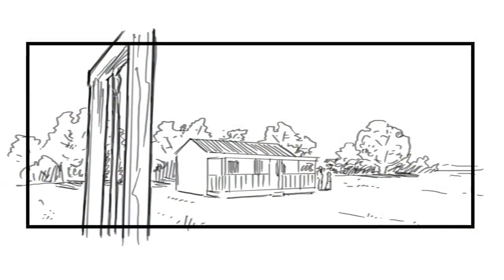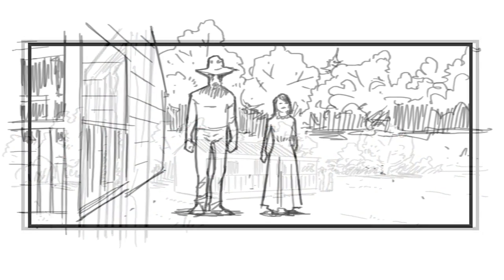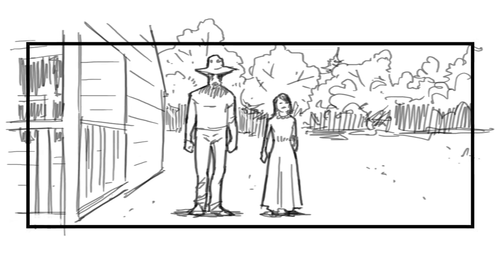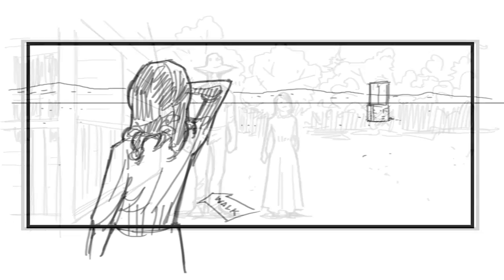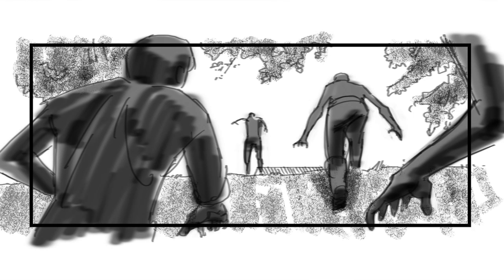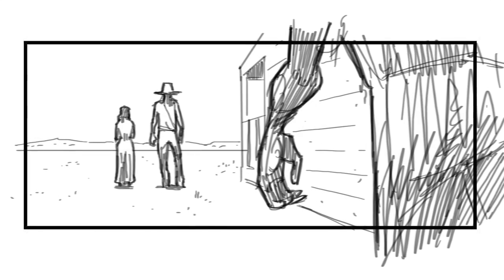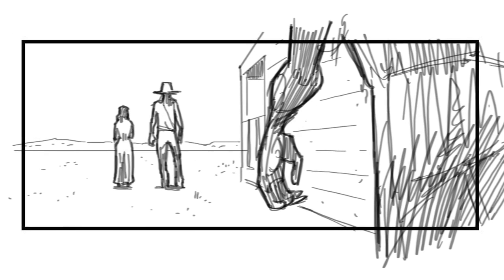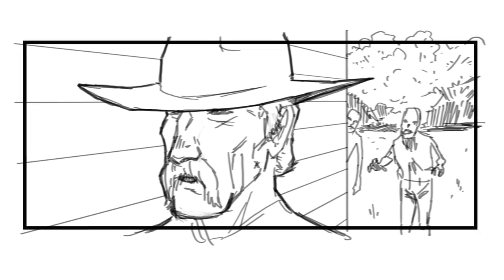Let's take an Old West setting. Let's say there's an old homesteader and his young daughter outside in front of their house and they see zombies approaching. Maybe these zombies are gonna start to show up before they've seen them. Maybe we're gonna see them together before they notice.